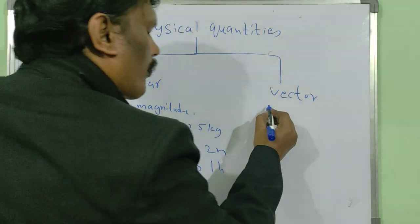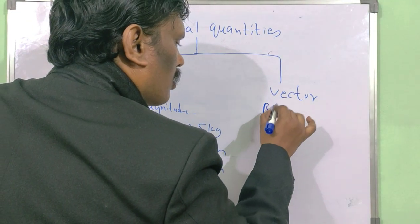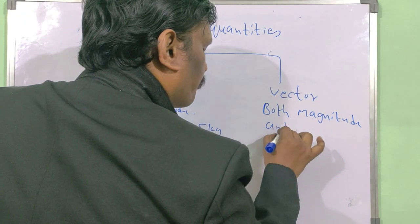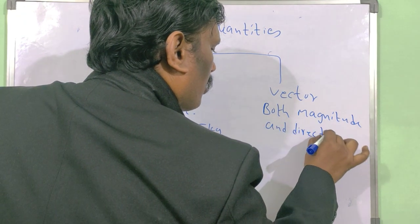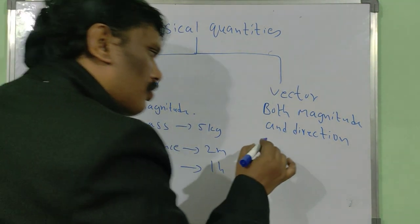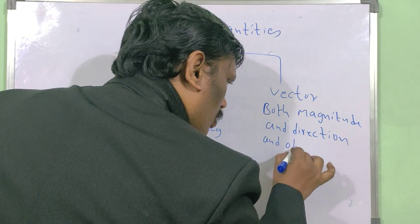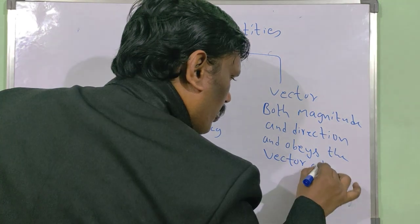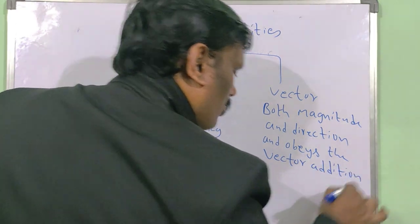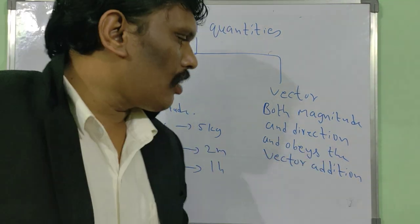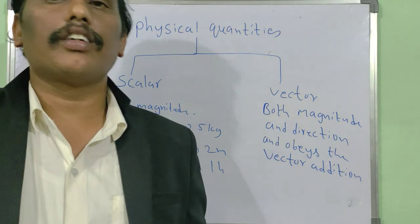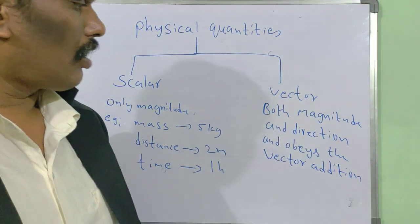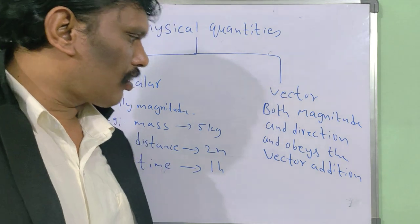Vector means it requires both magnitude and direction, and also it obeys the laws of vector addition. We will see what vector addition means in later sessions. So to summarize: a vector quantity must have both magnitude and direction, and must obey vector addition.